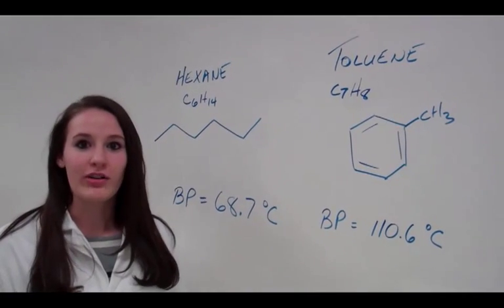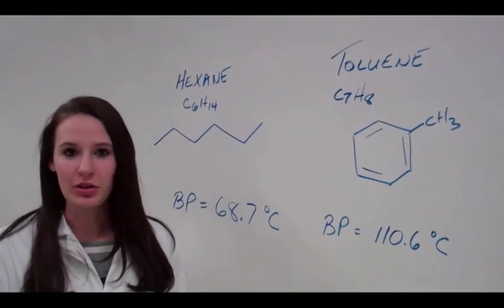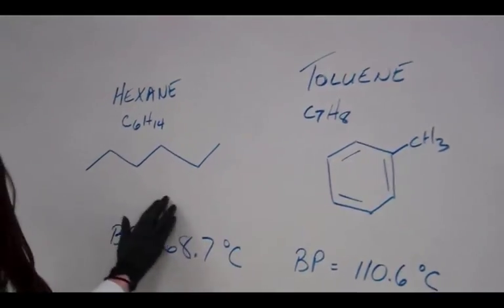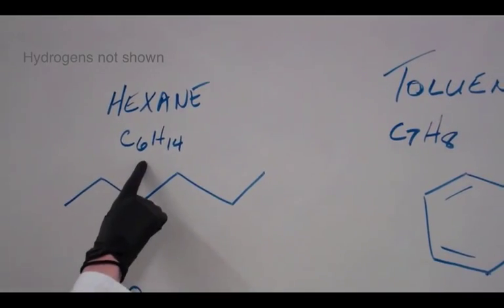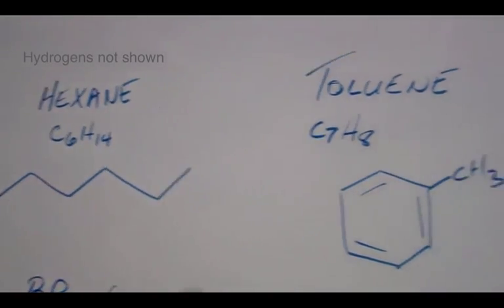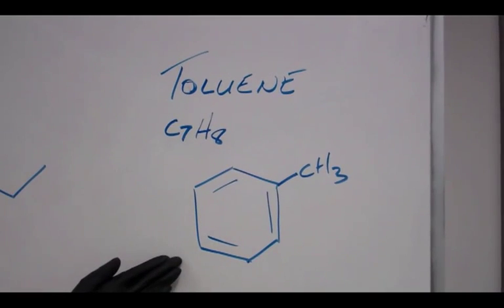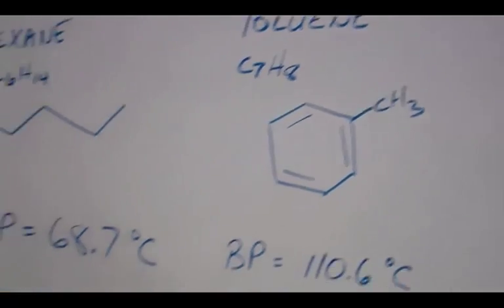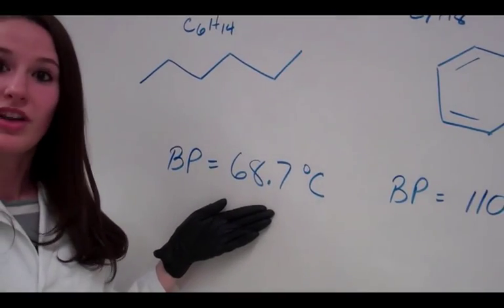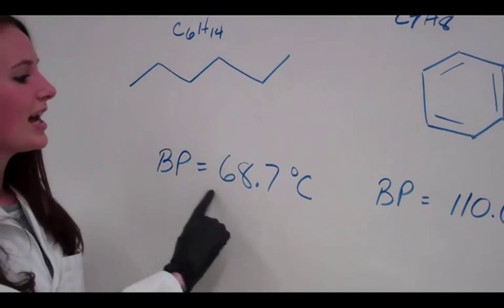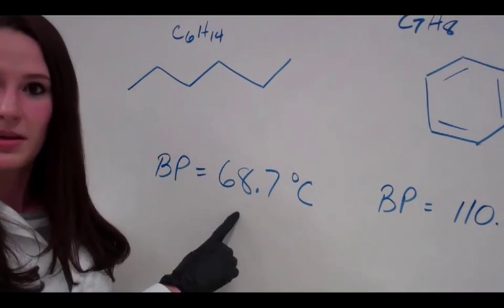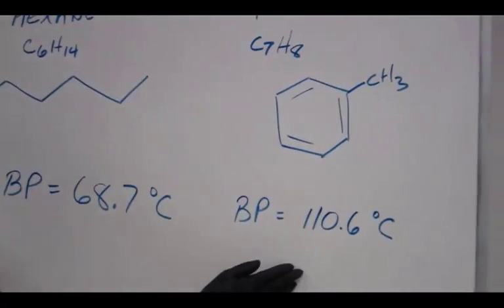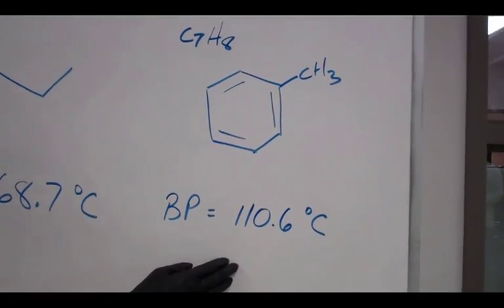So these are the two products that we're going to be separating via our simple distillation. Our first one is hexane with its structure here, 6 carbons, 14 hydrogens. Our second one is toluene, structure here, it's a ring with a methyl group, 7 carbons and 8 hydrogens. The hexane is going to produce vapors first and be collected first because it has the lower boiling point of 68.7 degrees Celsius, whereas toluene has a much higher boiling point at 110.6.